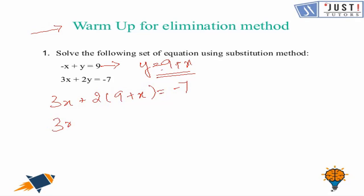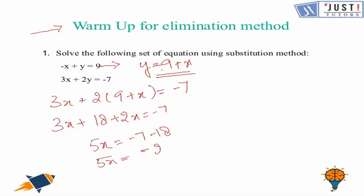So that gives us 3x plus 2 times (9 plus x) equals minus 7, which becomes 3x plus 18 plus 2x equals minus 7. That gives us 5x equals minus 7 minus 18, so 5x equals minus 25. Dividing both sides by 5 gives us x equals minus 5.